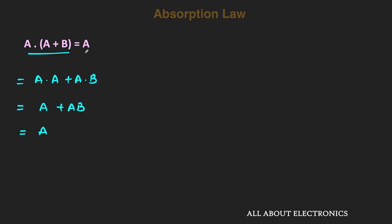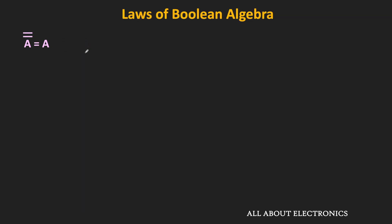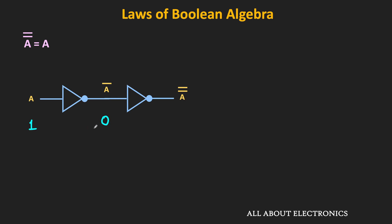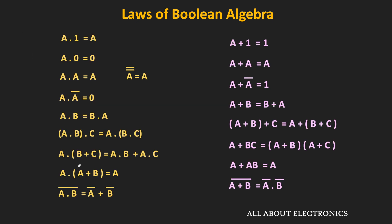Finally, let us look at double negation. The complement of a is equal to ā. If we take the complement of ā again, we get ā̄ (a double bar). If a is 1, then its complement ā is 0, and taking the complement again gives 1. So ā̄ is the same as a, meaning the complement of ā is the same as a.